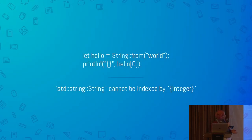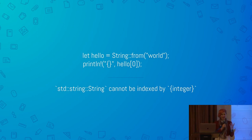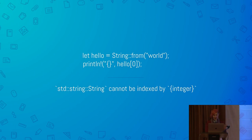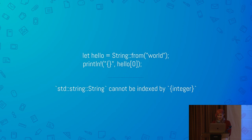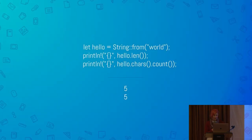So if we just get started — who has tried to index into a string in Rust? You get a 'string cannot be indexed' error and you're like, why? Why is this happening to me?